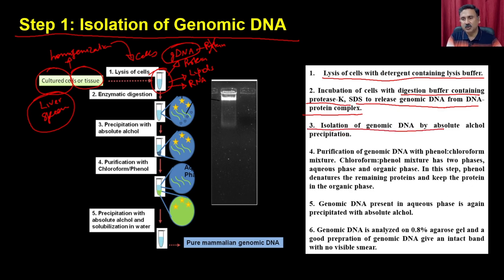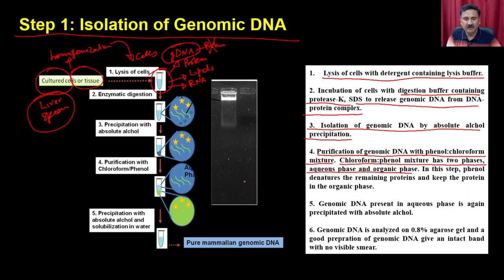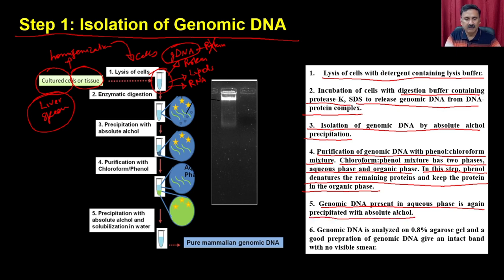In step 3, isolate the genomic DNA by absolute alcohol precipitation. This DNA will still contain contaminants like proteins, lipids, and RNA. To remove these, perform purification with a phenol-chloroform mixture, which has two phases — an aqueous phase and an organic phase. Phenol denatures remaining proteins and keeps them in the organic phase. The genomic DNA stays in the aqueous phase and is isolated and re-precipitated with absolute alcohol.